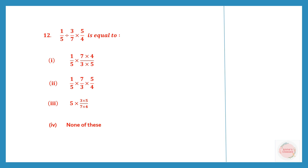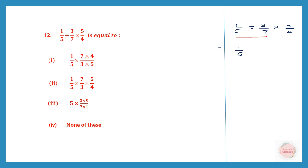Question 12. We have 1/5 divided by 3/7 into 5/4. When you have division and multiplication, work on the division first. So 1/5 — division changes to multiplication — and we write the reciprocal: 7/3, then into 5/4. Checking the options: 1/5 into 7/3 into 5/4 matches option 2, which is our answer.